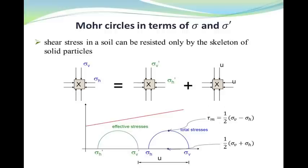Also, the center of the Mohr circle and also the maximum shear stress can be calculated by these two simple equations. If we have the sigma_v and sigma_h, according to our experimental test, then we can derive the sigma_v' and sigma_h', and then we can draw our Mohr circle easily.